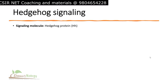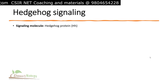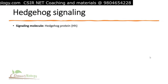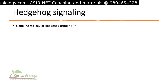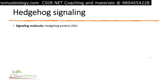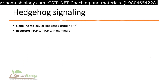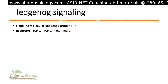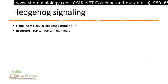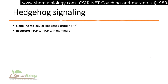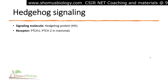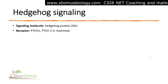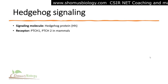The signaling molecule used in Hedgehog signaling is the Hedgehog protein itself, short form Hh. The receptor used here is known as the Patched receptor, short form PTCH. PTCH1 and PTCH2 are the two very common receptors for Hedgehog signaling in mammals.